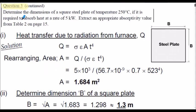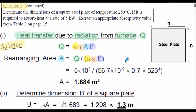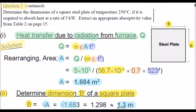Question 3 solution continued. We know the heat transfer due to radiation alone, symbol Q, given by our equation. We rearrange the equation to find the area A by dividing throughout by the sigma, epsilon, and T to the 4 terms. Inserting the values, the area required is 1.684 metres squared. In step 2, dimension B of the square plate is simply the square root of A, which evaluates to approximately 1.3 metres.